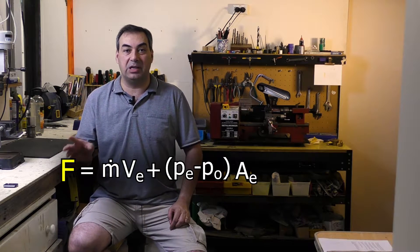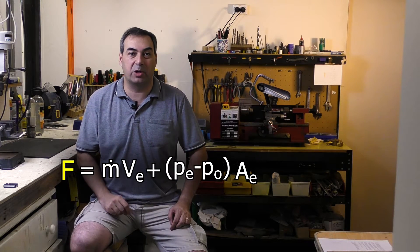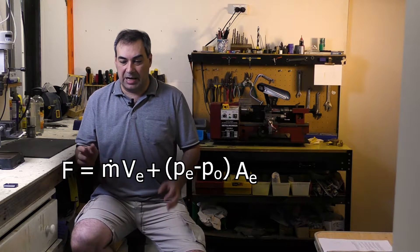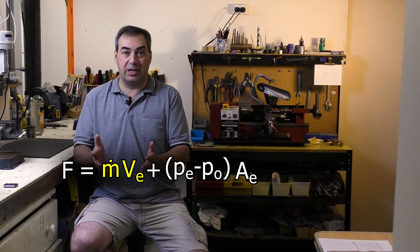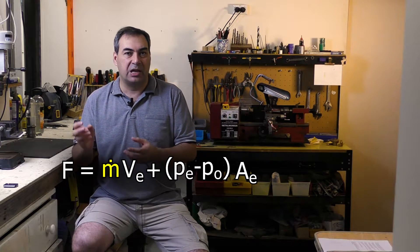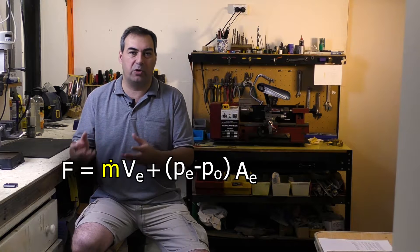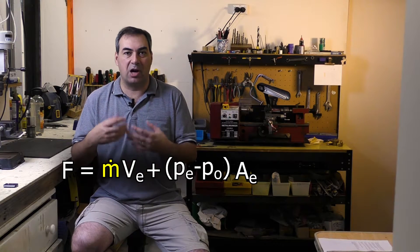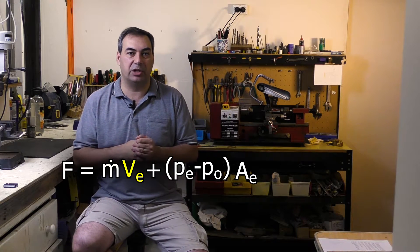Over here you've got the thrust or the force that the rocket produces to propel it upwards and that's made out of two terms. This one is the momentum thrust and that's just the mass flow rate, in other words, the rate at which the mass of the water or air flows through the nozzle times the velocity at which it exits.